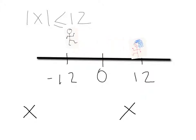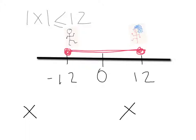If you want to look at the graph that would illustrate this, this is what it would look like. Close dot at negative 12, close dot at 12, and all the numbers in between. The inequality would be x greater than negative 12 and x less than 12.